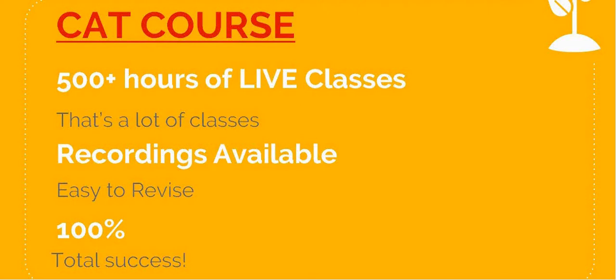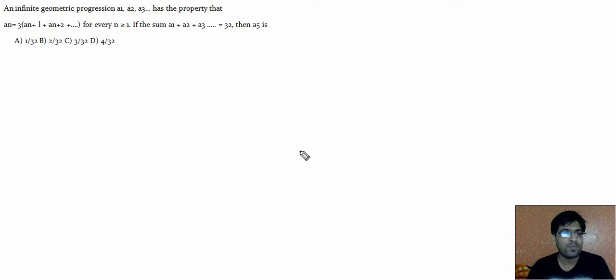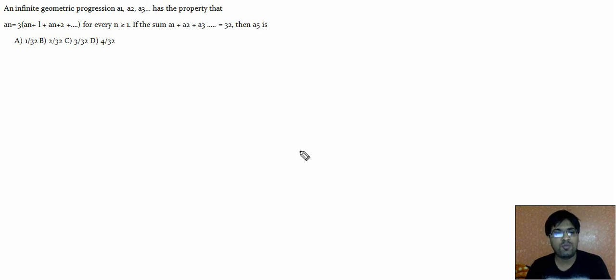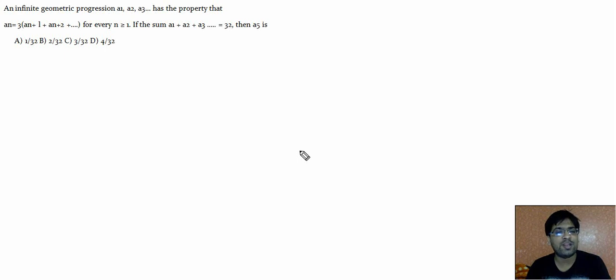Now let's proceed to our question. An infinite geometrical progression a1, a2, a3 has the property that a_n equals three times of (a_{n+1} + a_{n+2} + ...) till infinity, for every n greater than or equal to 1. If the sum a1 + a2 + a3 + ... till infinity is given as 32, we want to find the value of a5.